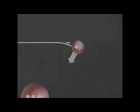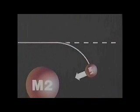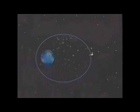Newton's first law of motion: a body in motion will keep moving at the same speed and in the same direction unless acted upon by an external force. A satellite moves in a curved path around the earth because the earth's gravitational pull acts as an external force on it.